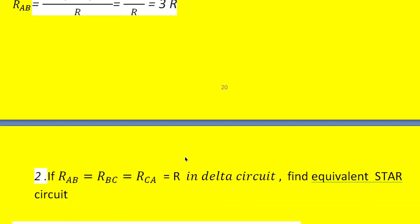Dividing 3R² by R we get 3R. So if the star-connected system has equal resistance in all branches then the equivalent delta will have each branch equal to three times the star branch resistance. That is what it shows. Similarly for Rbc and Rca we calculate the same value.